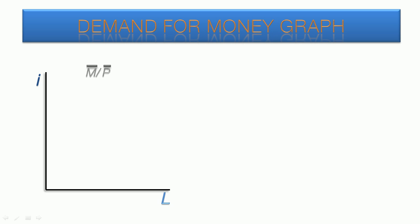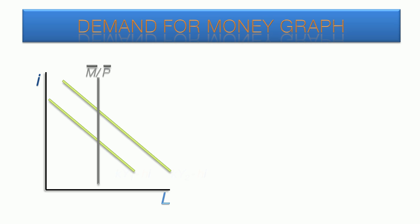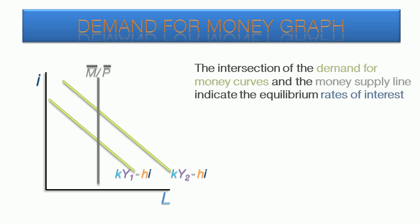Represented graphically, the money supply is a vertical line. In the very short run, it is fixed. This graph shows two demand for money curves for different levels of national income, Y1 and Y2. The intersection of the demand for money curves and the money supply line indicates the equilibrium rates of interest, I1 and I2.